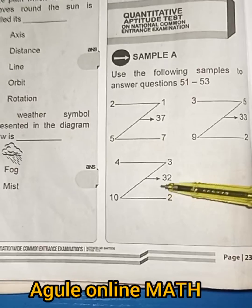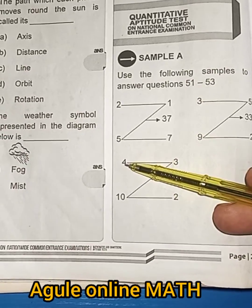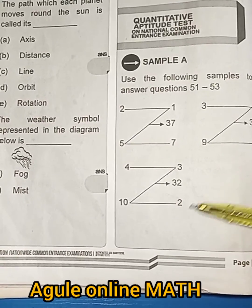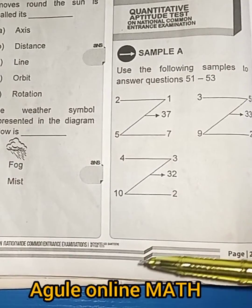If you want to get 32 here, you do 4 times 3, that is 12. 10 times 2, that is 20. 20 plus 12 is 32.